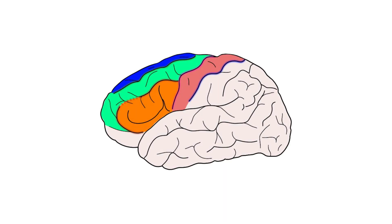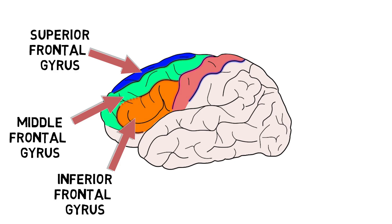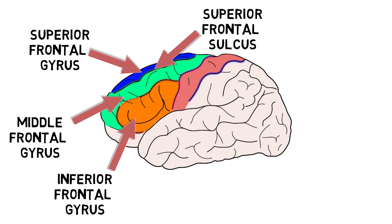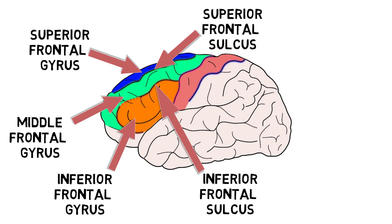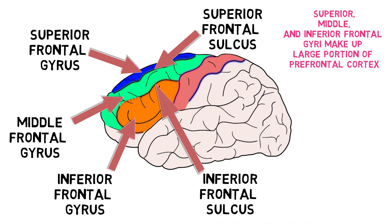The rest of the lateral surface of the frontal lobe is made up of three gyri: the superior, middle, and inferior frontal gyrus. The superior frontal gyrus extends onto the medial surface of the brain. The superior and inferior frontal gyri are separated from the middle frontal gyrus by the superior and inferior frontal sulci, respectively. These three gyri make up a large portion of the prefrontal cortex, an area especially well known for its contributions to higher cognition, such as planning, decision-making, and self-control.